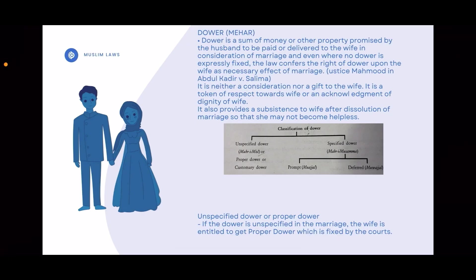Hello, welcome to High Legal. In this video, we are going to discuss Dahr or Meher, because Muslim Dhauka is a very important topic. Dahr is the sum of money or other property promised by the husband to be paid or delivered to the wife in consideration of marriage. Even where no Dahr is expressly fixed, the law confers the right of Dahr upon the wife as a necessary effect of marriage.